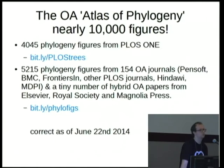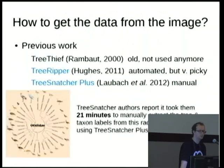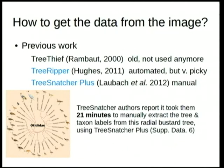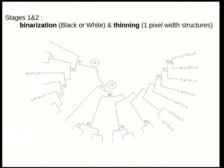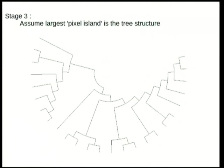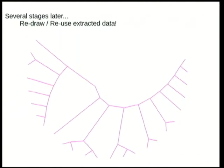Figure search is something we should pursue — I also know about Yale Image Finder. There has been previous work I'll briefly acknowledge: Tree Ripper was automated but very picky about tree style; Tree Snatcher Plus is very good but entirely manual. Our approach is going to be fully automated. I have Peter Murray-Rust, a computational chemist, to thank for help with computer vision and OCR. We're using binarization, thinning, and the largest pixel island is likely to be the tree structure — producing reusable phylogenetic data.